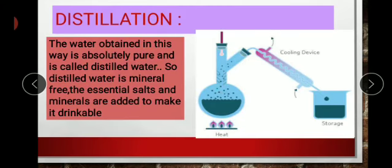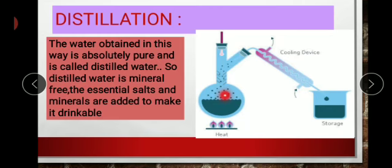The boiling starts, the water is converted into vapors, and moved toward the condenser, where it is converted back into liquid. All the salts and minerals remain in the flask. In this way, water is separated from all those minerals and salts. The water obtained is absolutely pure — it is called distilled water. It is mineral-free and now drinkable.